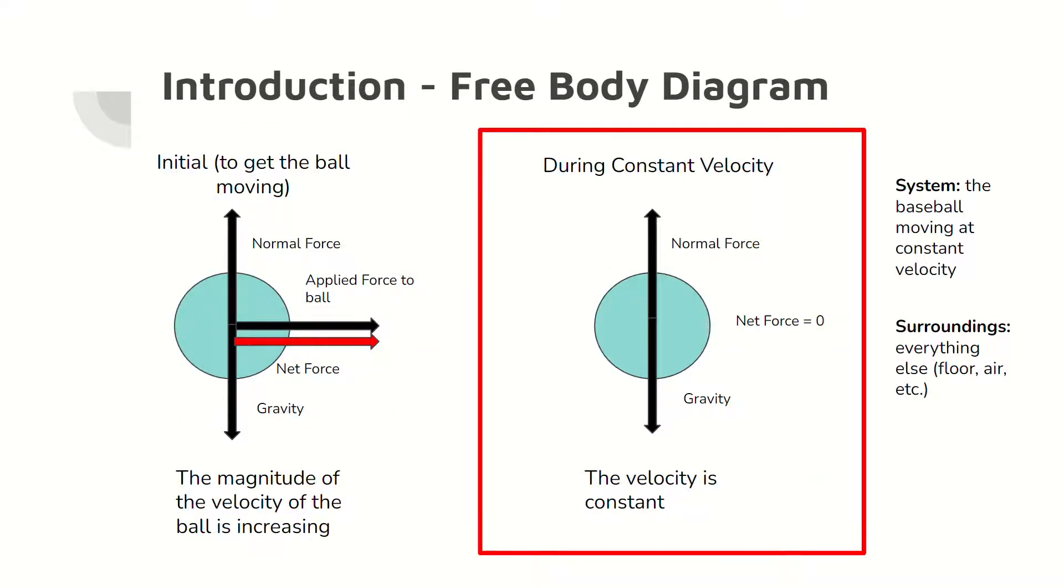This free body diagram shows the expected forces acting on the baseball, with the previously mentioned assumptions taken into consideration. An initial force was applied to the ball to allow the ball to move from rest. At constant velocity, there should be no net forces acting on the baseball, so the ball will move in its current motion and velocity. The system is the baseball and everything else is the surroundings.